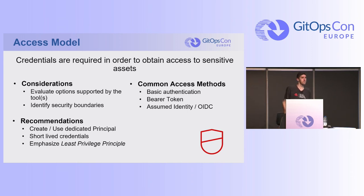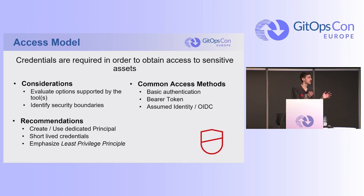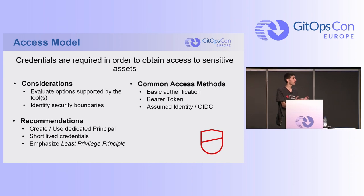What are some common access methods for talking to and accessing your secrets? One, the simplest is basic auth. Two, most common is bearer token — that's one of the ways you can talk to Kubernetes. Three, which is really cool, is assumed identity via OIDC. GitHub Actions, AWS, and GitLab are now starting to support OIDC for accessing external resources — you don't have to store secrets; you can use assumed identities on the platform. I'm also part of the SigStore project where we use OIDC extensively. Look into it — it's a great way to manage secrets and security.